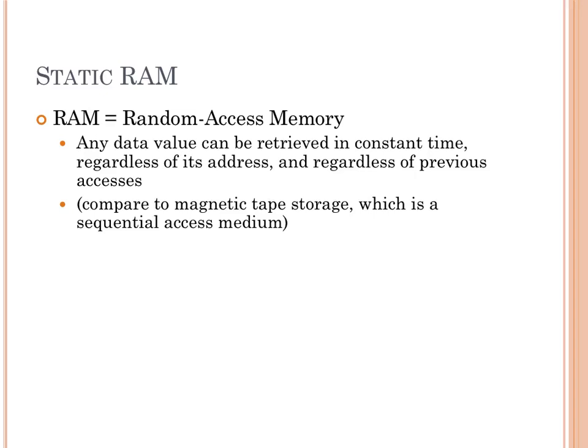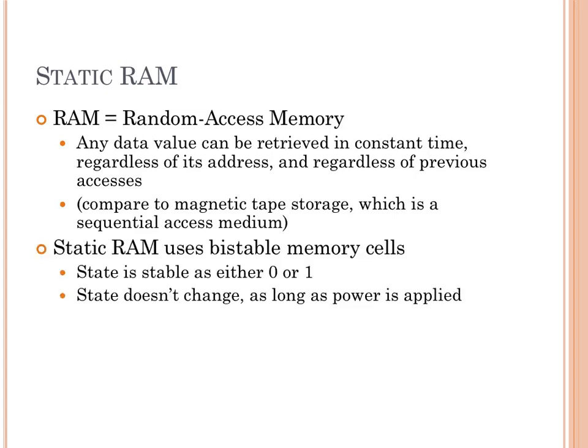When we say random access memory, we mean you can access any address and it will be equal cost. We prefer memories that way so we can access them — great for writing sorting algorithms. You also have sequential access like magnetic tapes; CDs and optical storage tend to be sequential. It's much cheaper to access the thing that's adjacent as opposed to going to some random location. But we really like to use random access memory inside computers.